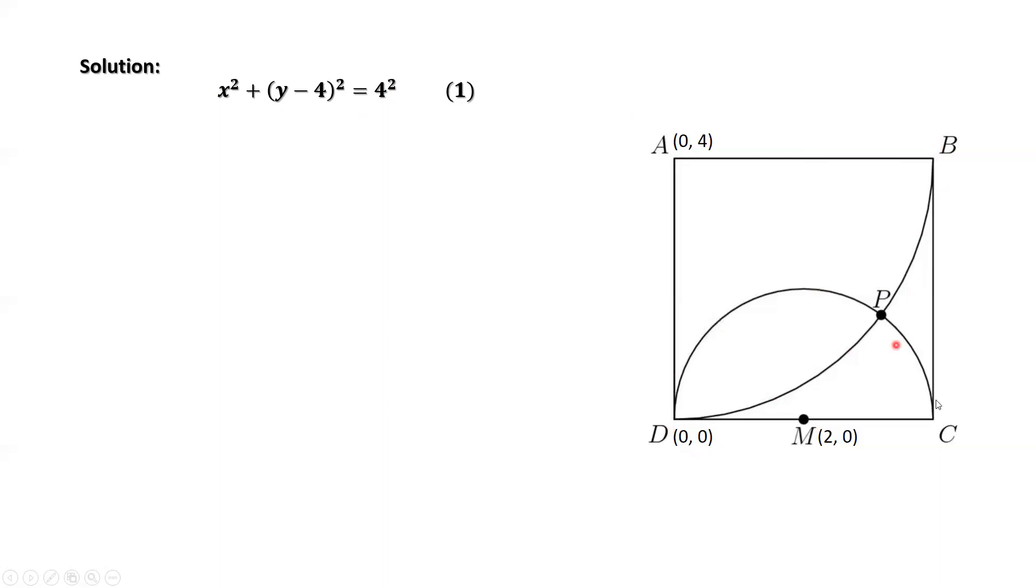For this smaller semicircle, we know the equation. x minus 2, y minus 0. x minus 2 squared plus y squared equals 2 squared. 2 is the radius.